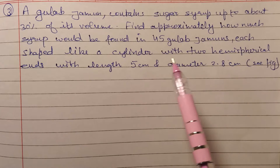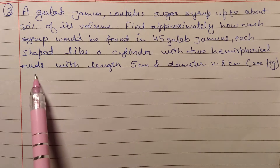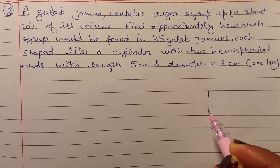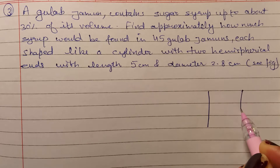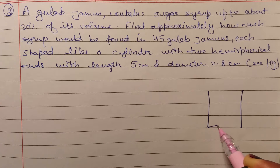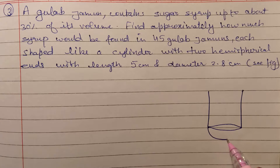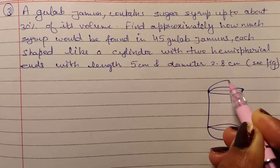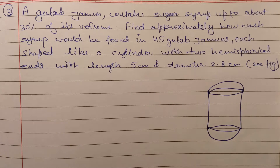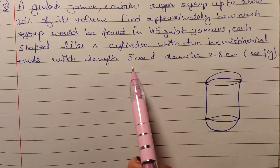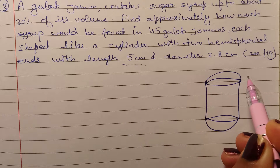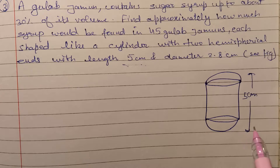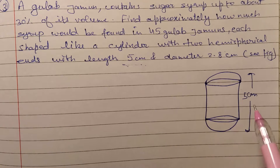एक gulab jamun की shape कैसी है — cylinder with two hemispherical ends। तो हम इसकी diagram बनाते हैं। इसका मतलब यहां पर भी hemisphere होगा और यहां पर भी hemisphere। इस shape का है हमारे पास gulab jamun, जिसकी length 5 cm है। Gulab jamun की total length है 5 cm और diameter है 2.8 cm।